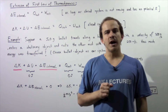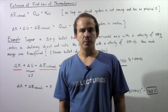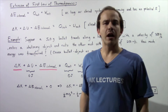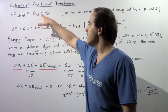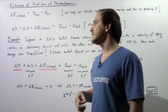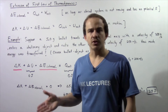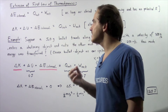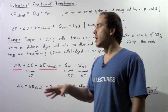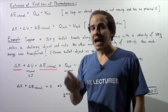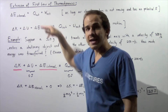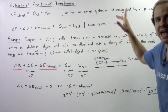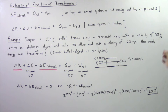In the previous lecture, we defined the first law of thermodynamics, and we said that the change in internal energy of our closed system is equal to Q net plus W net, where Q net is the amount of energy transferred as a result of a difference in temperature, and W net is the amount of work done on or by our object. Note this equation only holds as long as our closed system is not in motion and has no potential energy.